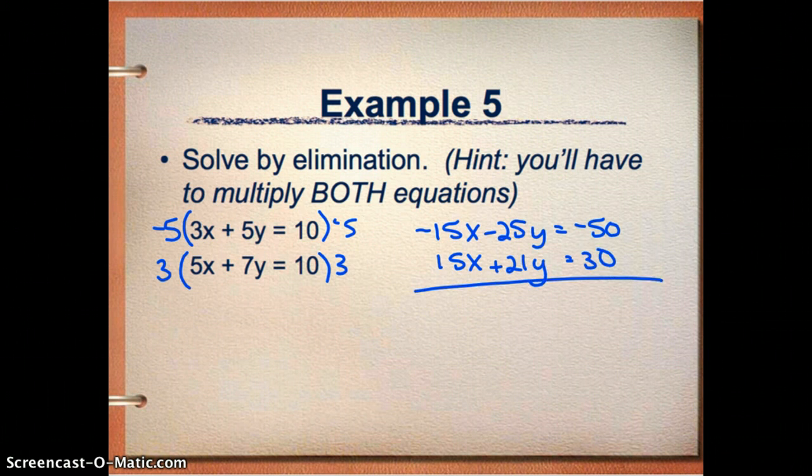Now this looks nice. I can solve it just like I have been solving by adding them up together. So my x's cancel out. My y is negative 4y equals negative 20. If I divide that by 4, I think y equals 5.